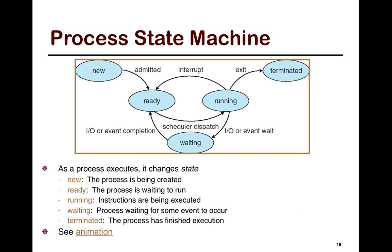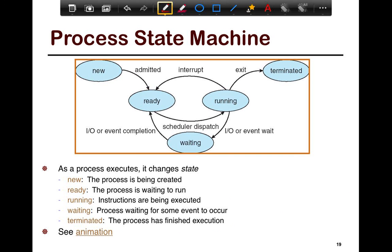The first time a process ever comes into existence, it starts out in the new state. When the operating system admits it and says this process is ready to be run on the CPU, it's not yet actually running — it gets in line into the queue and waits for the CPU to become available. In that case, it gets into the ready state.